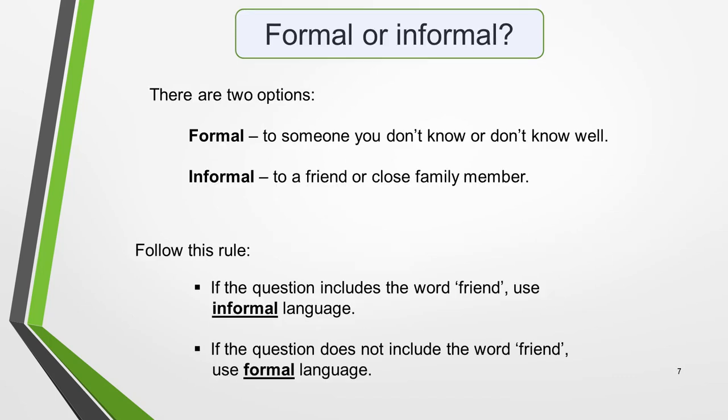IELTS letters must be written in the appropriate tone and style. There are two options: formal, to someone you don't know or don't know well, or informal, to a friend. It's essential that you're able to identify what type of letter you're required to write. Follow this rule: if the question includes the word 'friend', use informal language. If the question does not include the word 'friend', use formal language. The person we're writing to in this question is not a friend, so we must write a formal letter.